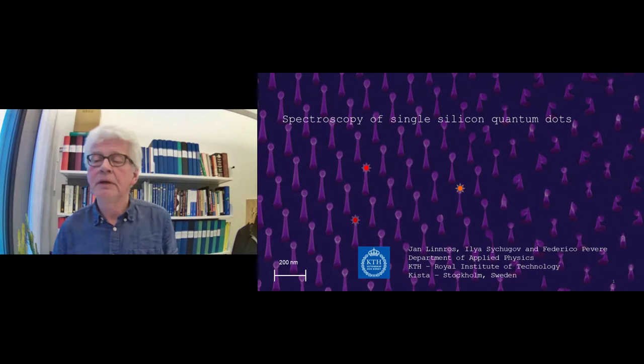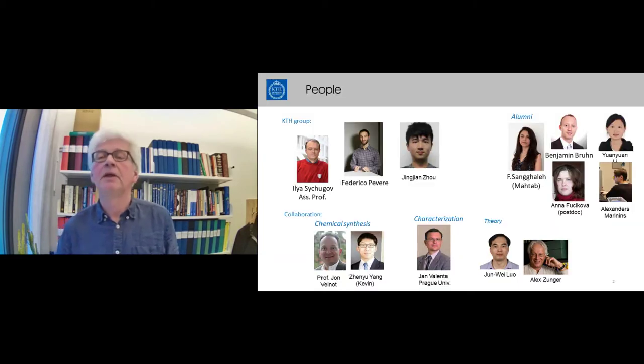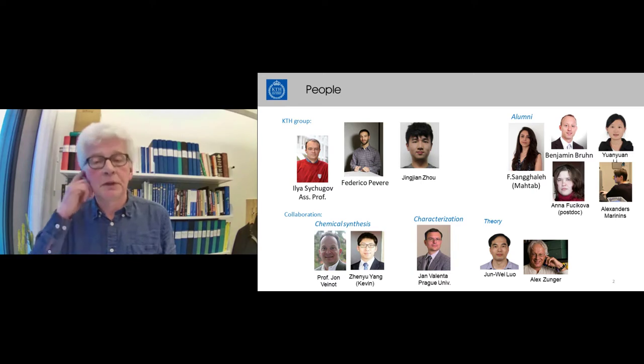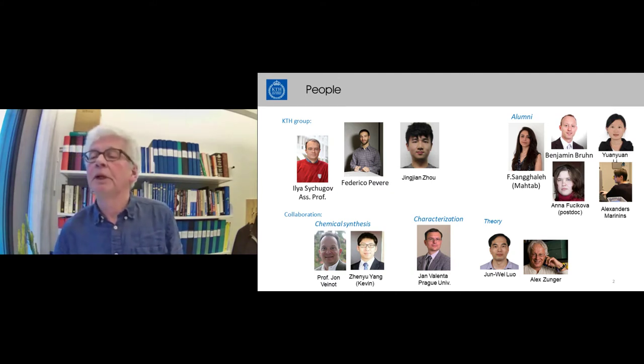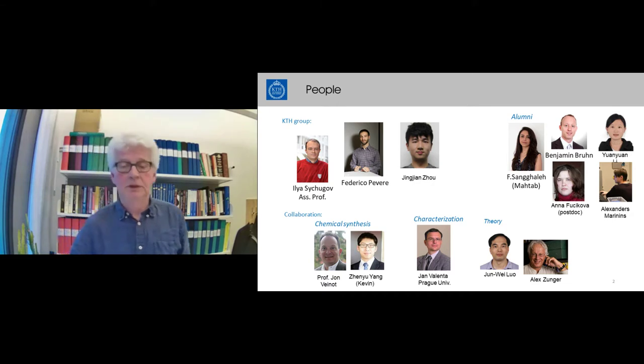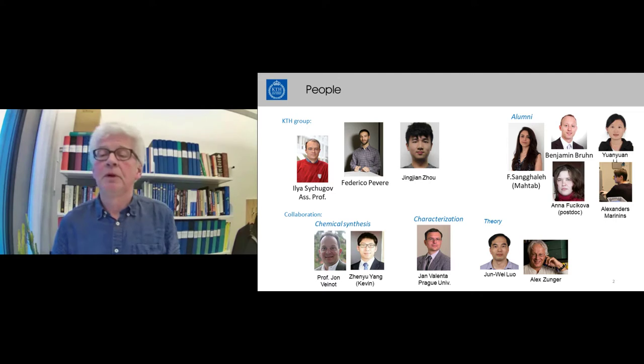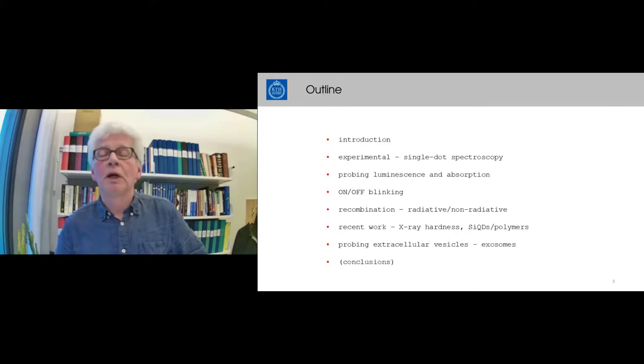My main collaborators are here. Yesu Shugo is the first that characterizing the dot luminescence. He's still with us. Federico Pevere is out in the industry now, he was very central to much of the characterization. Xinjiang Su is a new PhD student. He's in the lab right now. We have some alumni students, Mata, Benjamin, Johan, Anna Fujikova who is a postdoc, Alexander Marinins. We have collaboration with chemical synthesis with Jonathan Veinot and Kevin. We worked much together with John Valenta's group in Prague and on the theory side we have Jean-Veil Lou and Alex Zunger.